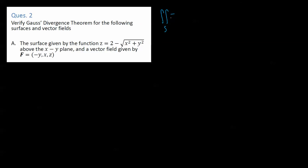In this question, we're asked to verify Gauss's Divergence Theorem for the following surfaces and vector fields. To verify it, we need to show that the left-hand side — the flux, which is the surface integral of F dotted with the unit normal, integrated over the surface — is equal to the volume integral of the divergence of the vector field integrated over the volume. We need to show that the left-hand side equals the right-hand side.